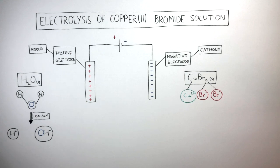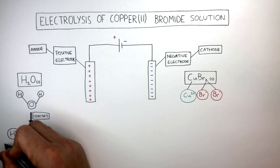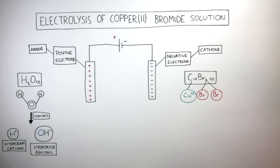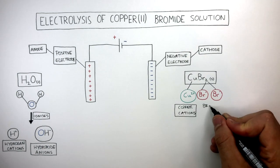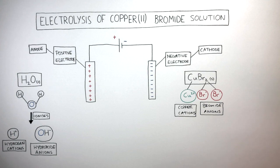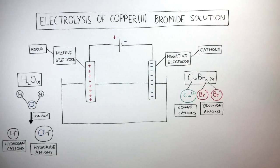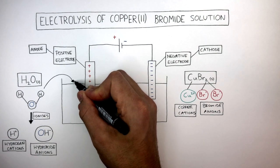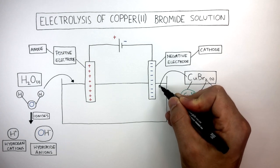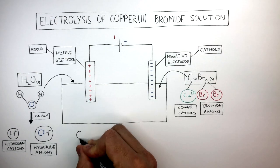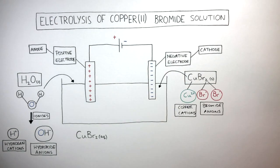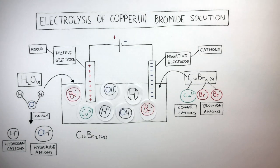So in copper bromide solution, the ions present will be hydrogen cations, hydroxide anions, copper cations, and bromide anions. For electrolysis to take place, we need a container to hold the electrolyte. The electrolyte is liquid water and solid copper bromide mixed together, and the copper bromide dissolves to form CuBr₂(aq) — AQ meaning aqueous — copper bromide solution, which contains four ions: Cu²⁺, Br⁻, H⁺, and OH⁻.